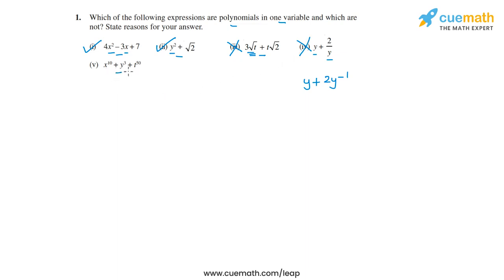In option five, there are three variables — x, y, and t — and the power of each is an integer. But since there are three different variables, while it is a polynomial, it is not a polynomial in one variable. So option five is not correct. Of the five given options, only the first two are polynomials in one variable.